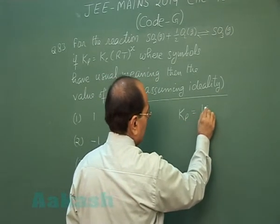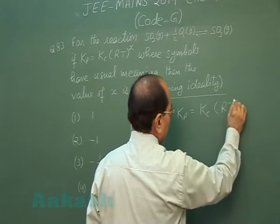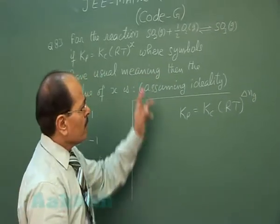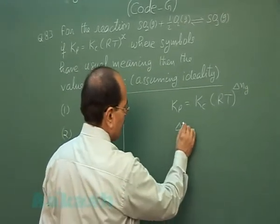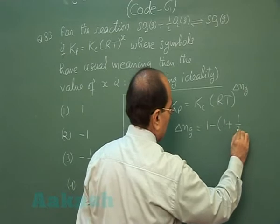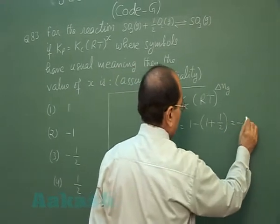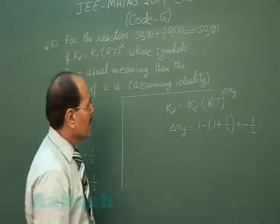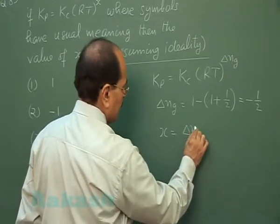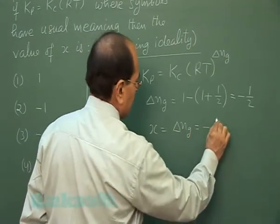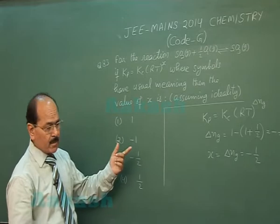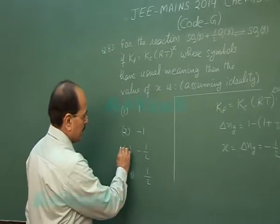Now for the given reaction, KP is related to KC as KP equals KC into RT raised to the power delta NG. For the given reaction, delta NG is equal to 1 minus (1 plus 1/2), that is minus half. In the given expression, X is equal to delta NG, that is minus half.